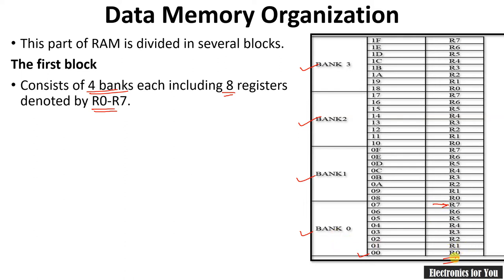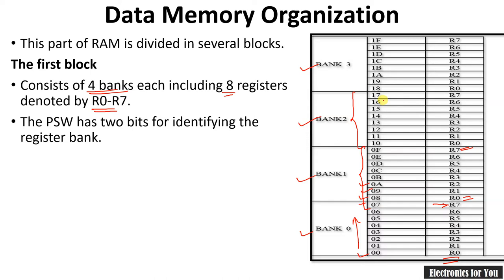Bank 0 has registers R0 to R7, and Bank 1 also has R0 to R7. The addresses are sequential: 0, 1, 2, 3, 4, 5, 6, 7 — then in hexadecimal, 8, 9, A, B, C, D, E, F. Bank 2 also has R0 to R7, starting from 10h, and Bank 3 follows. In total, the first 32 registers cover this block.